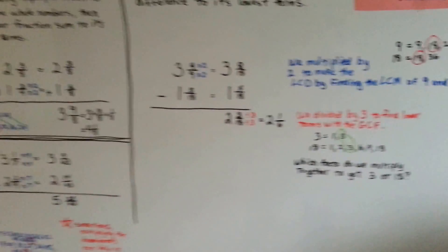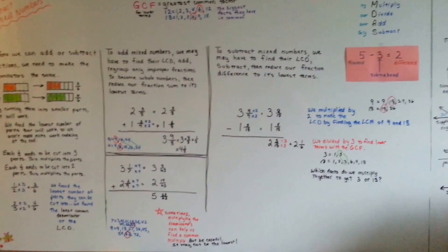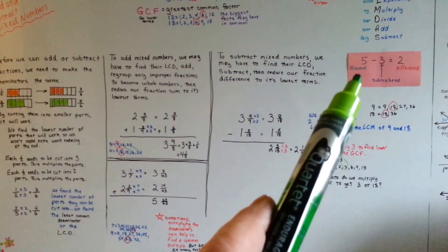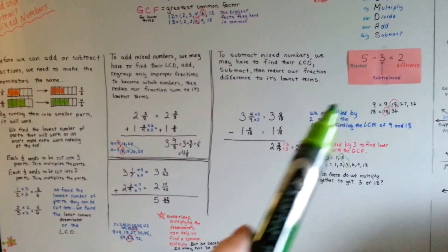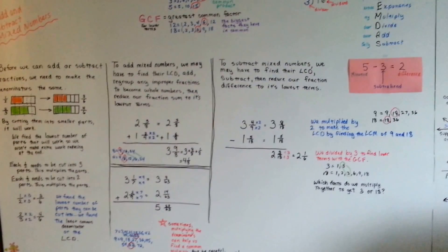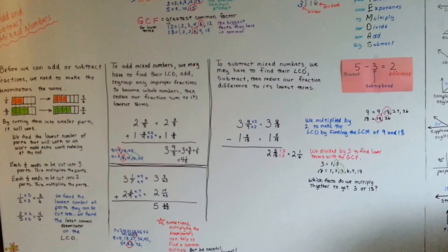No big deal. So, that is adding and subtracting mixed numbers. In our next video, we're going to talk about what happens when the fraction, the minuend, that's the one we're subtracting from, is still not big enough, and we have to borrow from the whole number. We'll talk about that next.